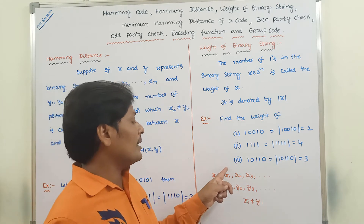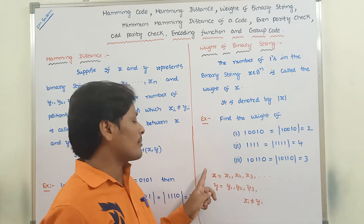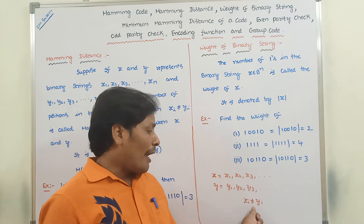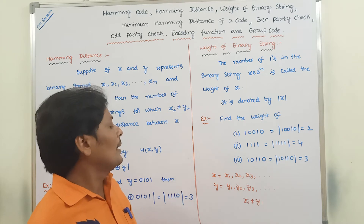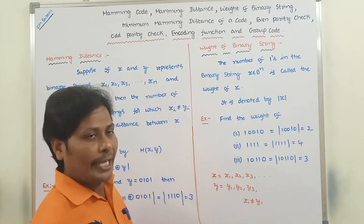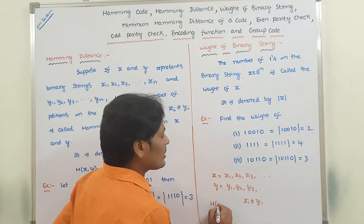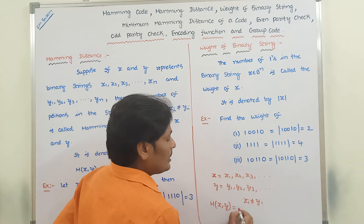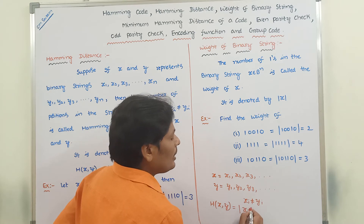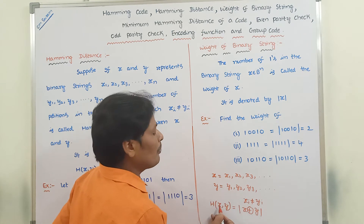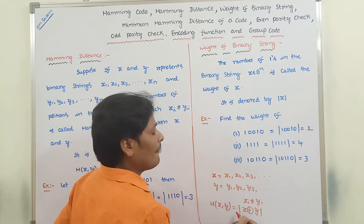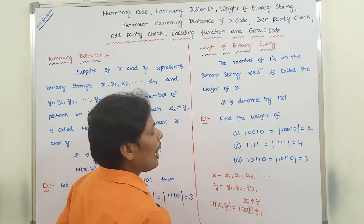How many positions between the corresponding bits of two binary strings x and y have xi not equal to yi? That number is called the Hamming distance of two binary strings x and y. The Hamming distance of two binary strings x and y is denoted by h(x, y), and can be defined as mod of x XOR y.